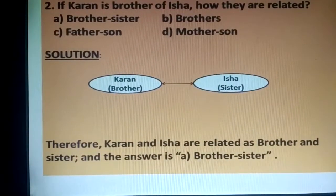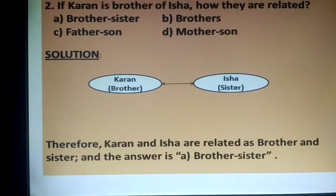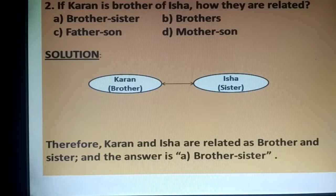If Karan is brother of Isha, how they are related? If Karan is Isha's brother, what is Isha to Karan? It's simple - sister. So the relation is brother-sister. Therefore, Karan and Isha are related as brother and sister, and the answer is A, brother-sister.